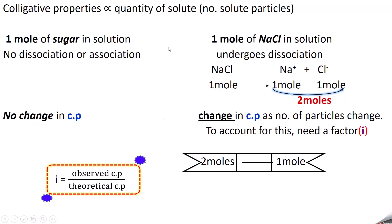Theoretical means theoretically calculated from the formula — that is what we call the normal, theoretical, or calculated colligative property. But what we observe in the experiment gives the actual number of particles. If there is dissociation or association, there will be an increase or decrease in the number of particles in solution, which is observed only through experiment. That is what we call the observed or abnormal colligative property. To account for this, we introduced a factor called I, defined as: I = observed colligative property divided by theoretical colligative property. For a sugar solution, I = 1. If there is dissociation or association, I will not equal 1.